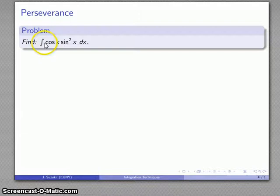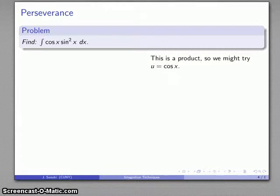Let's take a look at this. This is the anti-derivative of cosine x sine squared x dx, and a little bit of analysis goes a long way. This is a product, so we might try U equals one of the factors in the product. So U equals cosine x. Let's see what happens if we do that.